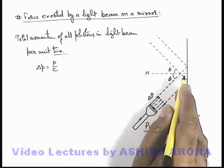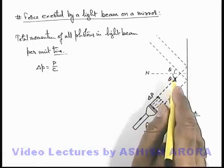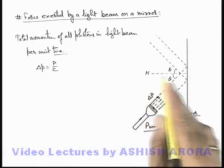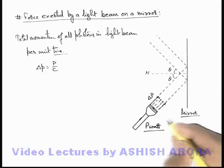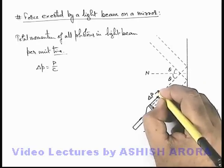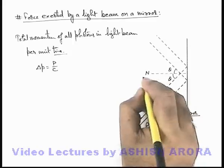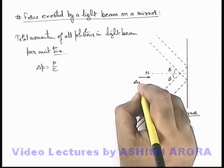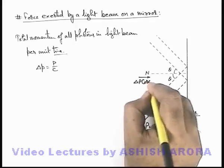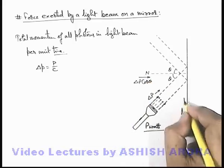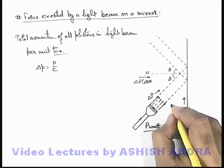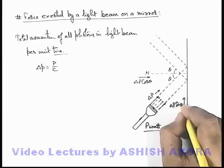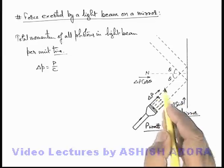So this is the momentum per unit time incident on the mirror at an angle theta from the normal to this mirror. In this situation, if this is the momentum delta P here, we can say along the direction of normal the momentum which will be incident is delta P cos theta, and along the direction parallel to mirror it will be delta P sine theta. Here we have just resolved the momentum into two components as it is a vector quantity.